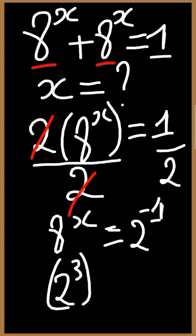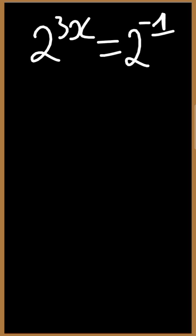Times the power which is x is equal to 2 raised to the power negative 1. This will give us 2 raised to the power 3x is equal to 2 raised to the power negative 1. The bases are the same therefore the powers must be the same. Then 3x will be equal to negative 1.